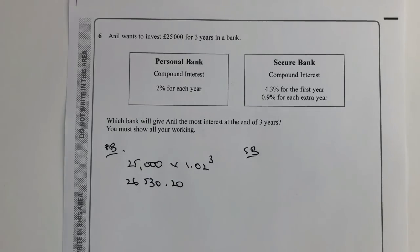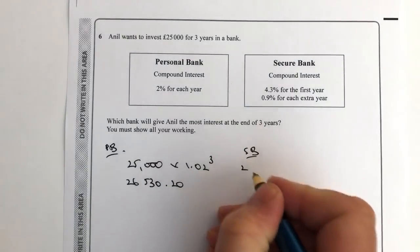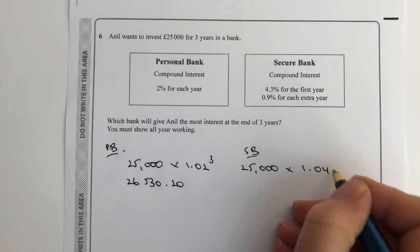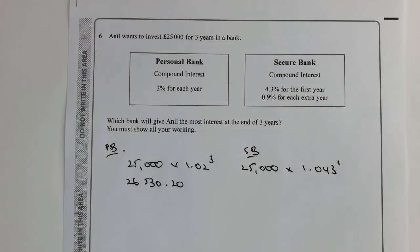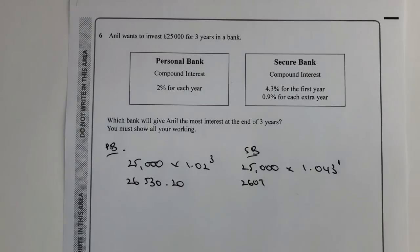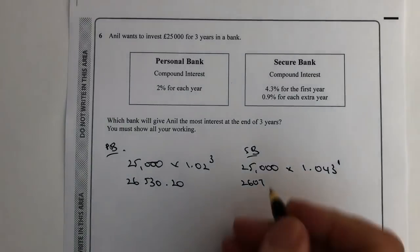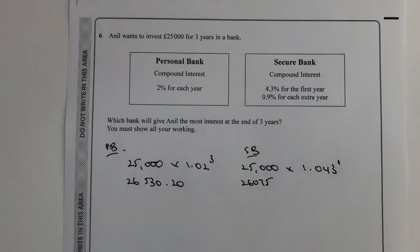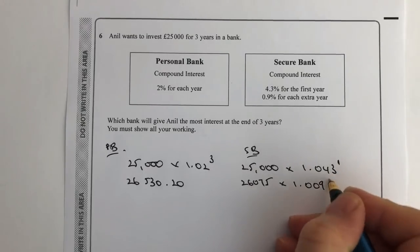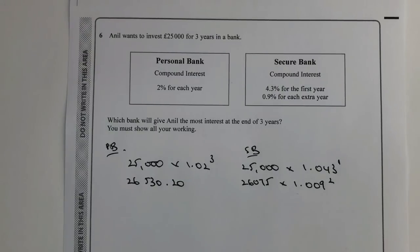With Secure Bank it's slightly different because they're going to give us 4.3 percent for the first year. So I've got £25,000 and I'm going to multiply that by 1.043 - just the one there to denote the first year. At the end of the first year I'm going to get £26,075. I'm then going to put that back into the account and I'm going to get 0.9 percent for each extra year, so that's going to be multiplied by 1.009 to the power of two. Just be a little bit careful about that 0.9 percent.